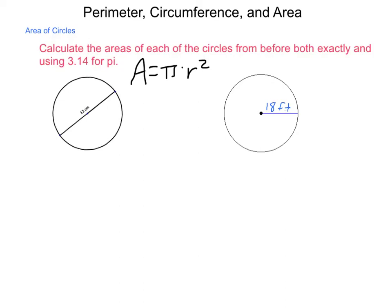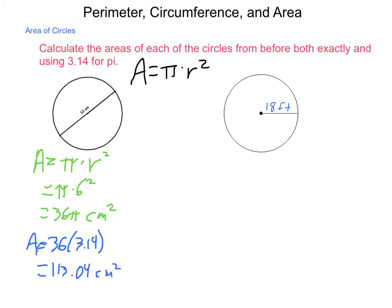So, our formula, we're going to do things both exactly and in terms of pi again. Area of this first one is pi times the radius squared. They give us the diameter. So, to get radius we simply cut it in half. This gives us pi times 6 squared which is 36 pi centimeters squared. Now, using the decimal approximation, area is equal to 36 times 3.14 and carrying out that computation we end up with 113.04 centimeters squared approximately. Not exactly.